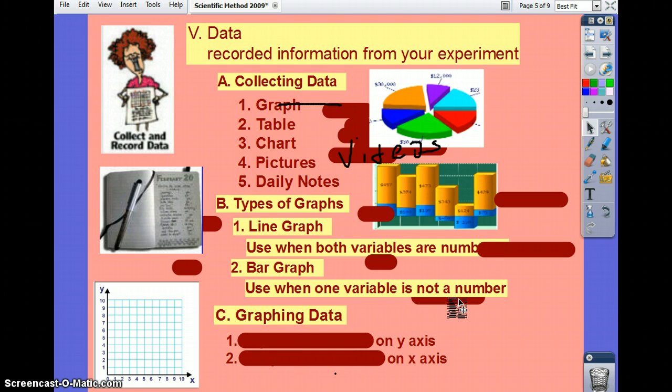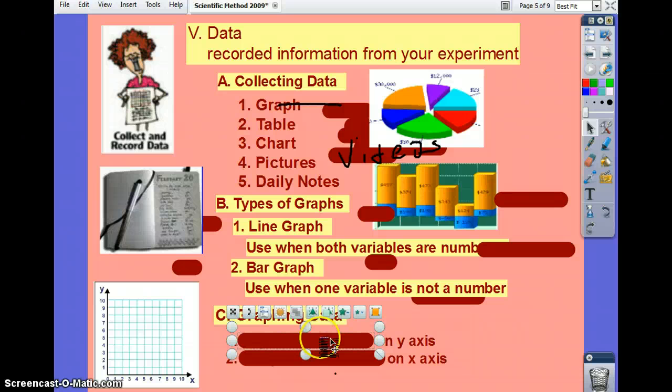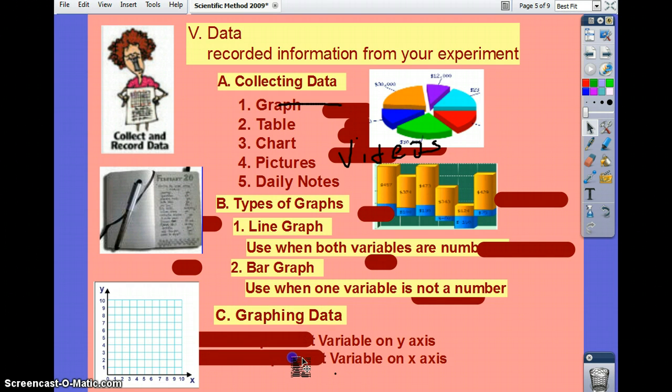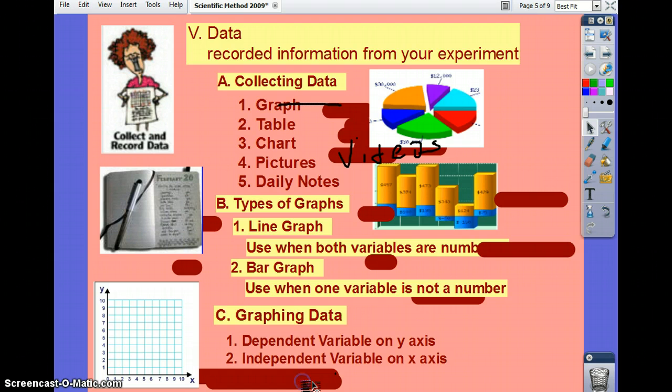Now, when you graph data, one variable goes on the y and one goes on the x. Anybody know which is which? Y goes up as vertical. Good. I got the y vertical, but which variable, and I will go like this, goes on the y and which variable goes on the x? The x is the independent variable. Good job. Independent variable and dependent variable. Always.